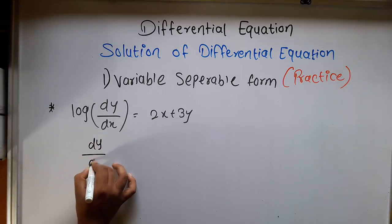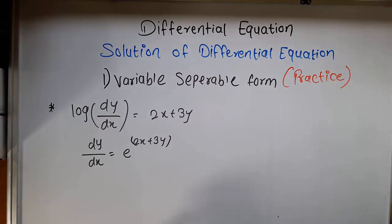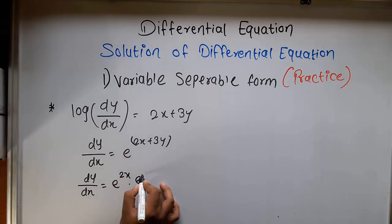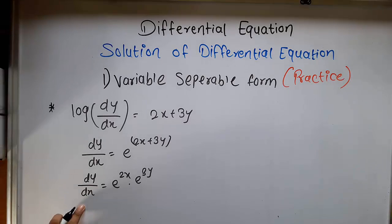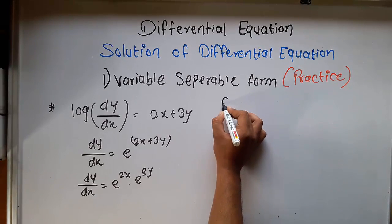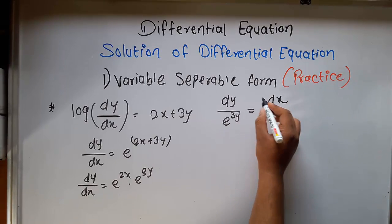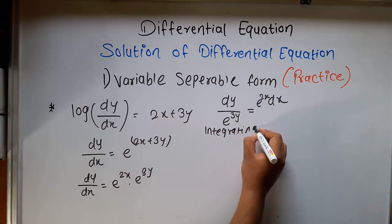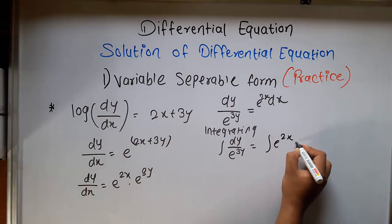It becomes dy/dx equal to e raised to (2x plus 3y). This is the function of x and this is the function of y. So we transfer the y function to the dy side and dx to the x side. It forms dy upon e raised to 3y equal to e raised to 2x dx. Now, integrating dy upon e raised to 3y is equal to integrating e raised to 2x dx.